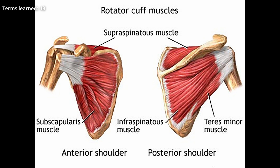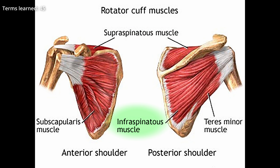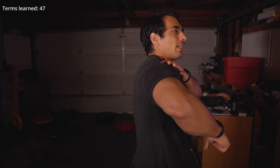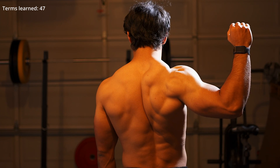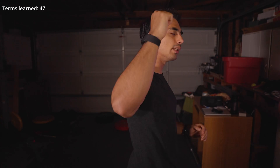There's the rotator cuff — a complex of four muscles. An easy way to remember it is SITS: Supraspinatus, Infraspinatus, Teres Minor, and Subscapularis. These muscles pretty much do external rotation of the shoulder and are really important for stabilizing the shoulder and allowing us to do a lot of things, including pulling movements. They're also very commonly injured, so it's an important group of muscles to work on.